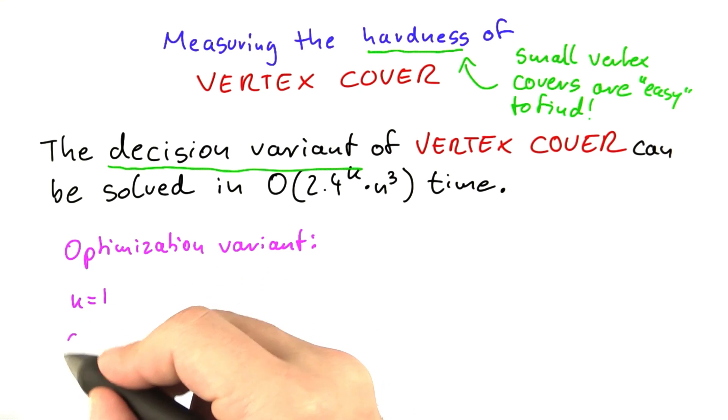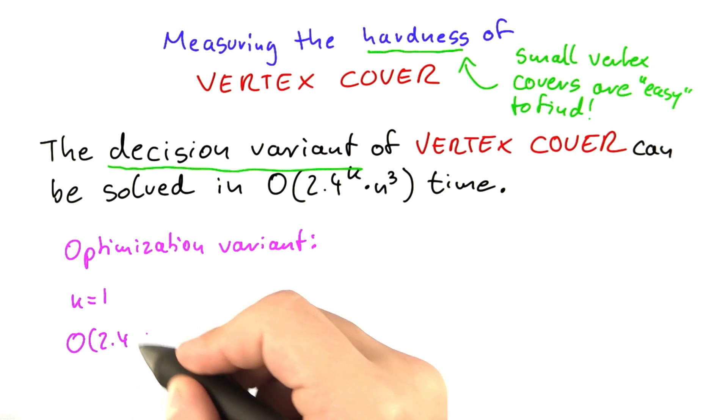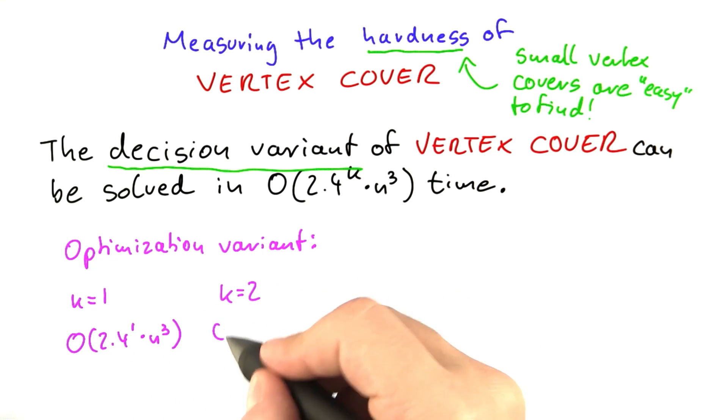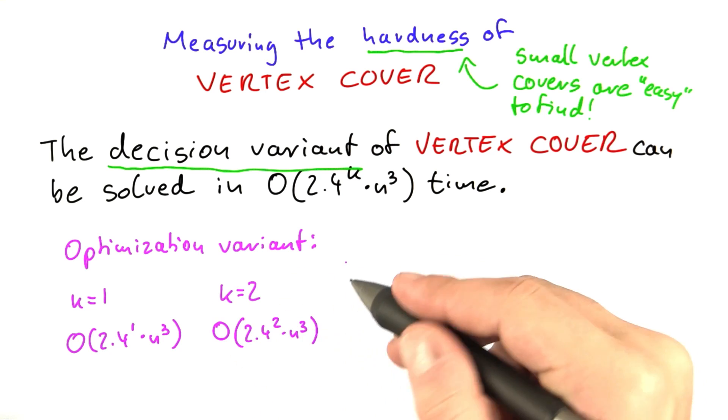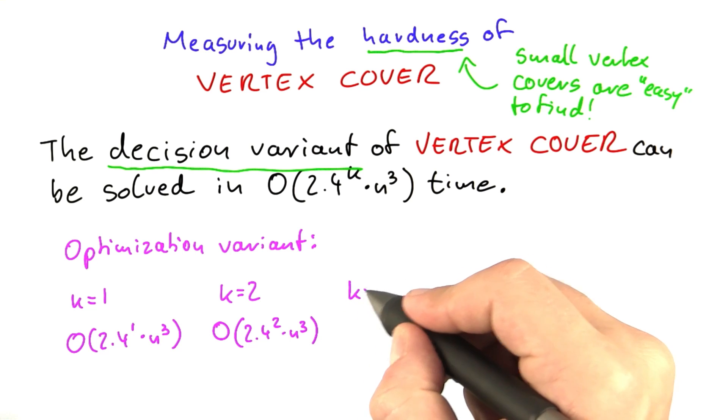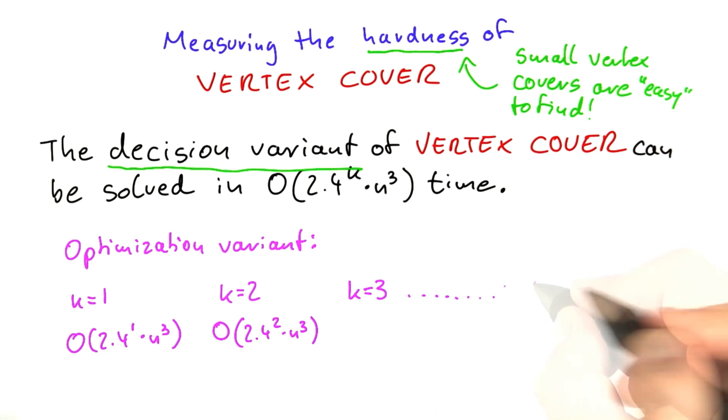Then our algorithm requires O(2.4^1 × n^3) time. Then we'll increase k to 2. The algorithm requires 2.4^2 × n^3 time. Each time we're solving the decision problem here. Then we increase k even further to k equals 3 and so on.